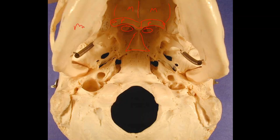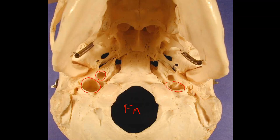Of course this is the mandible. I can see a big giant foramen magnum here where the brainstem and spinal cord will exit. I see here a jugular foramen and then a carotid canal sitting on top of it — and on the other side I can see them too. I can see a pharyngeal tubercle somewhere in here on this occipital bone. I can see an occipital condyle. There should be a hypoglossal canal visible if I could tilt it, but I can't see it from this aspect.